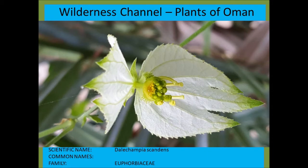This is a lovely little creeping plant — Dalechampia scandens. Scandens means spreading. It has really unusual flowers with nectaries — shiny globules of nectar that attract insects — from the Euphorbiaceae. This is the specific species found in Oman.